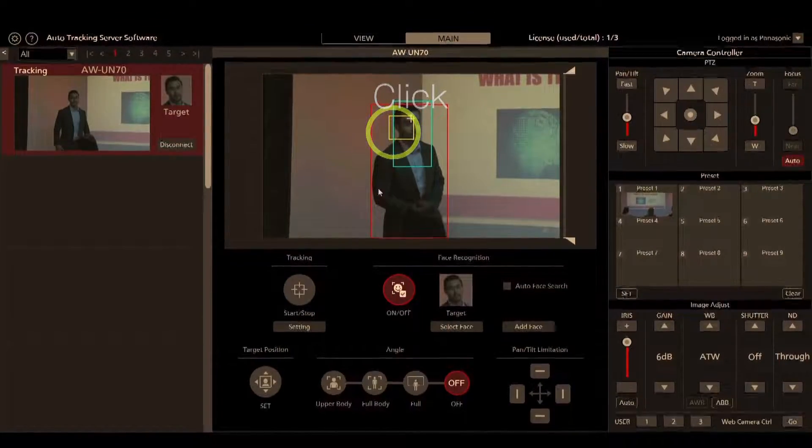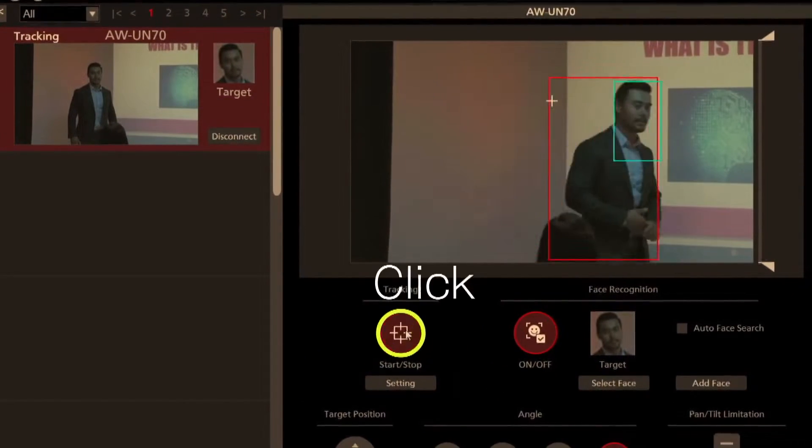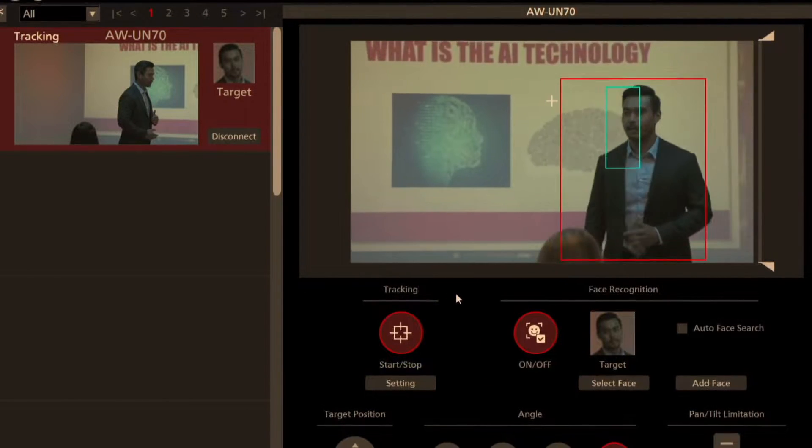When you double-click a face in a frame, it is registered as a target face. Then press the tracking start button, and the system will start automatic tracking. Isn't that easy?